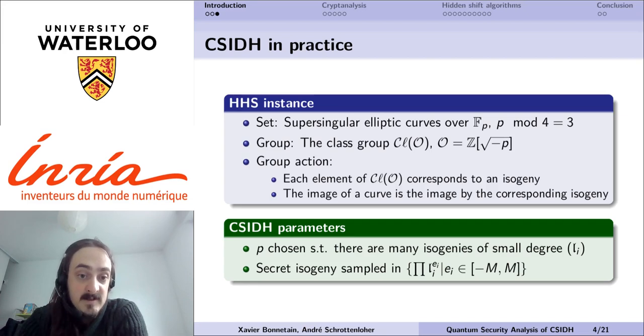Now, CSIDH in practice, it's an instance of hard homogeneous spaces whose set is a set of supersingular elliptic curves over a prime field, and whose group is their class group. For the group action, each element of the class group can be associated canonically to an isogeny, and the image of a curve is the image curve through the isogeny.